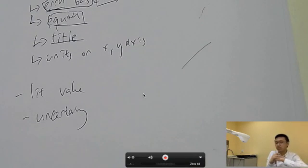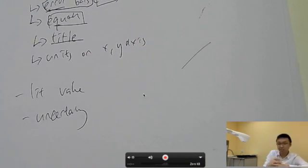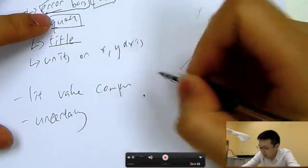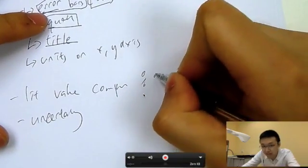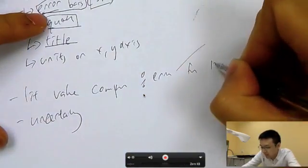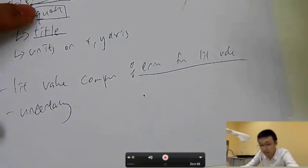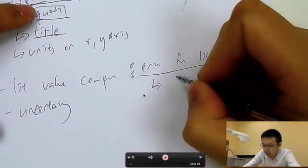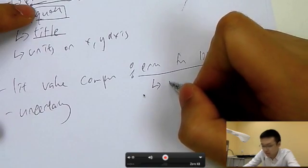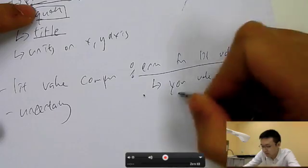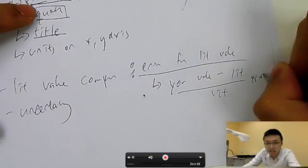In some IAs, you're trying to calculate a specific value — for example, the enthalpy of combustion of ethanol. In that case, you want to compare it with the literature value. Find the percentage error: your value minus the literature value, divided by the literature value, times 100. This is very important when you're trying to report a figure from your experiment.